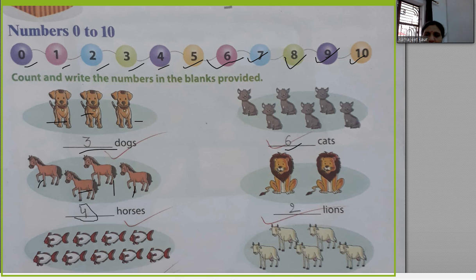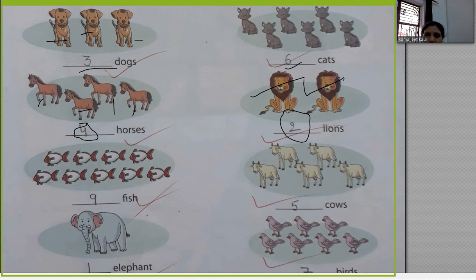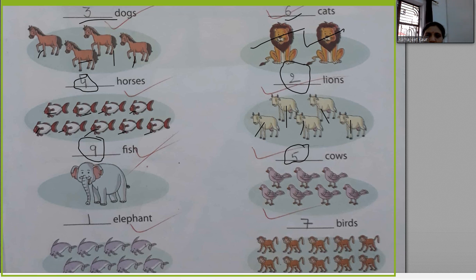How many horses are there? There are four horses. How many lines are there? One line, two lines — there are two lines. How many fishes are there? One, two, three, four, five, six, seven, eight, nine — there are nine fishes. How many cows are there? One, two, three, four, five — there are five cows.